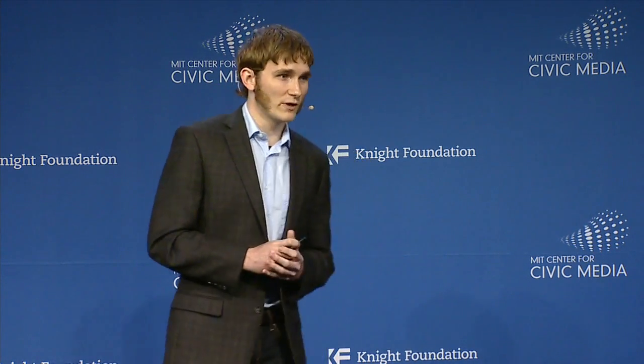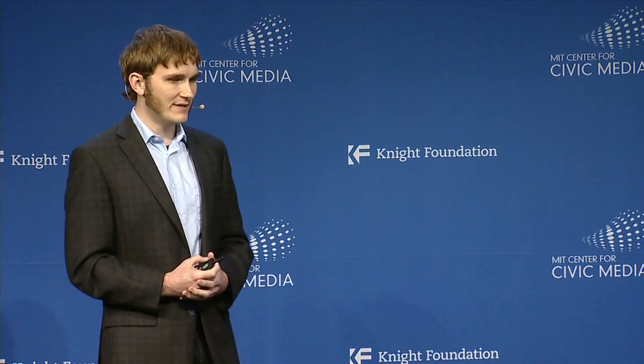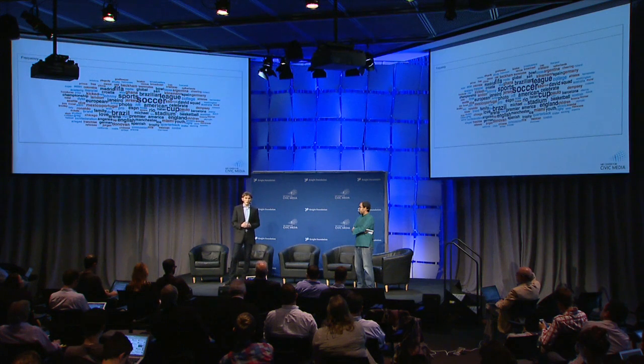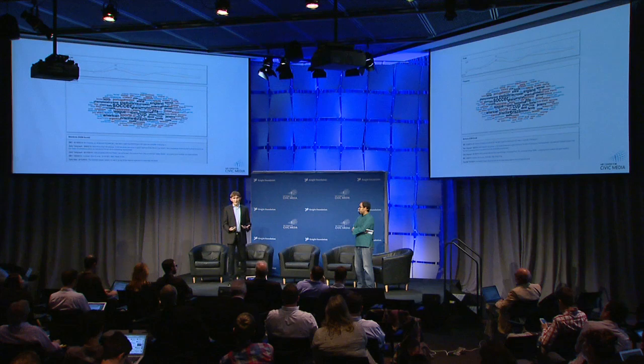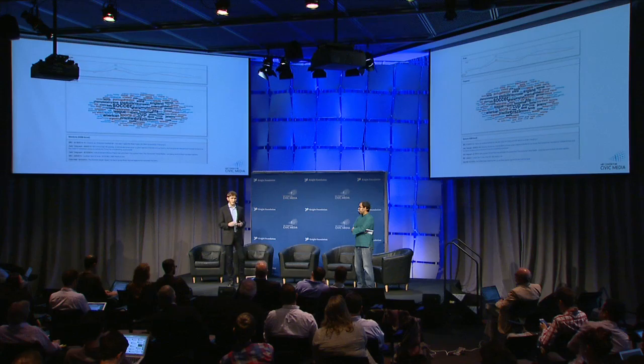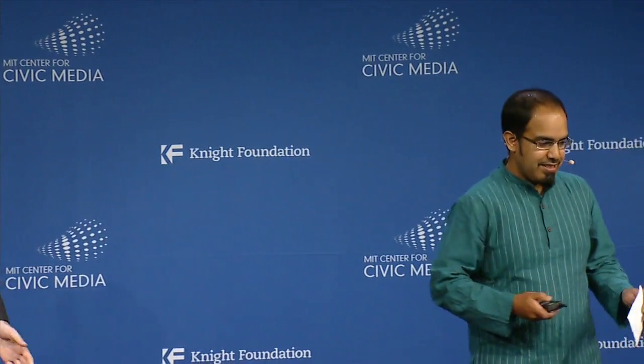The next widget is called Frequency, developed by an undergraduate named Deborah Chen at the Center for Civic Media. It lets you see what other words are mentioned when someone is talking about a particular subject. If you have two queries, it lets you see whether a word is mentioned in both or in just one. This is a framework, and we're currently extending it — a lot of the work is not just what we've done but what's coming forward.